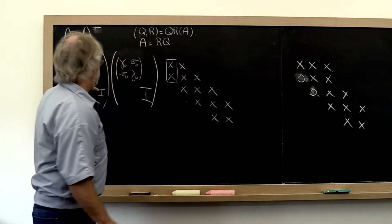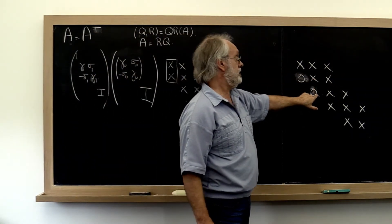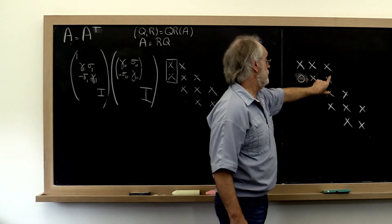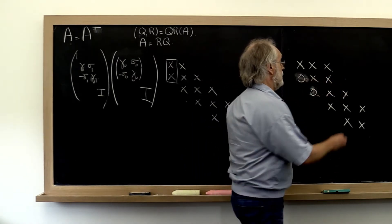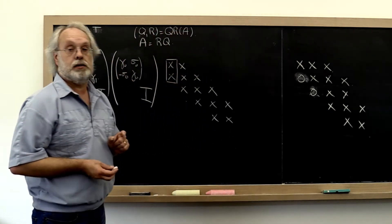And similarly when we then take this and apply it to this matrix where there was still an x here, then we apply it to this pair, this pair, and this pair. And therefore we introduce a nonzero right there.